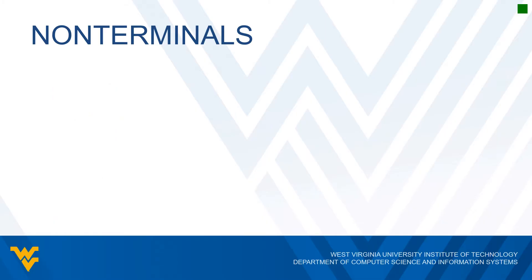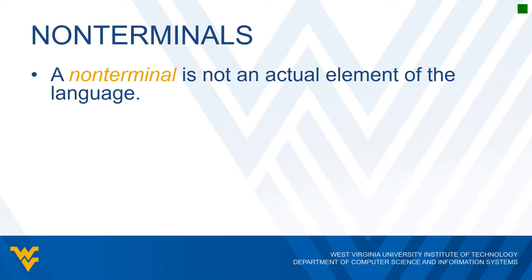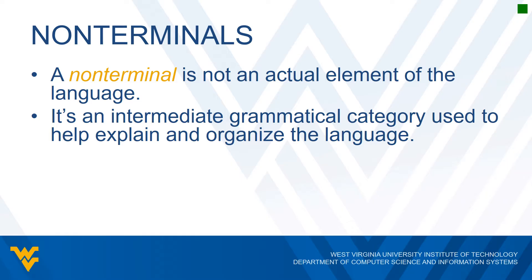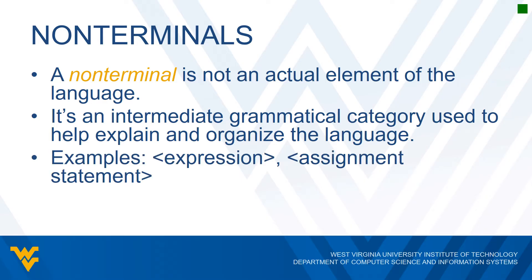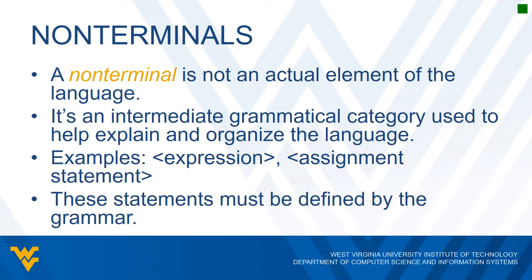The second type of object in a BNF rule is a non-terminal. A non-terminal is not an actual element of the language; instead, it's an intermediate grammatical category used to help explain and organize the language. For example, 'expression' and 'assignment statement' are non-terminals. These categories help us understand the structure of a statement and show that it's correctly formed, but they're not the actual words of the sentence being studied. They must be defined by the grammar — we put together the basic building blocks and give them a category name.